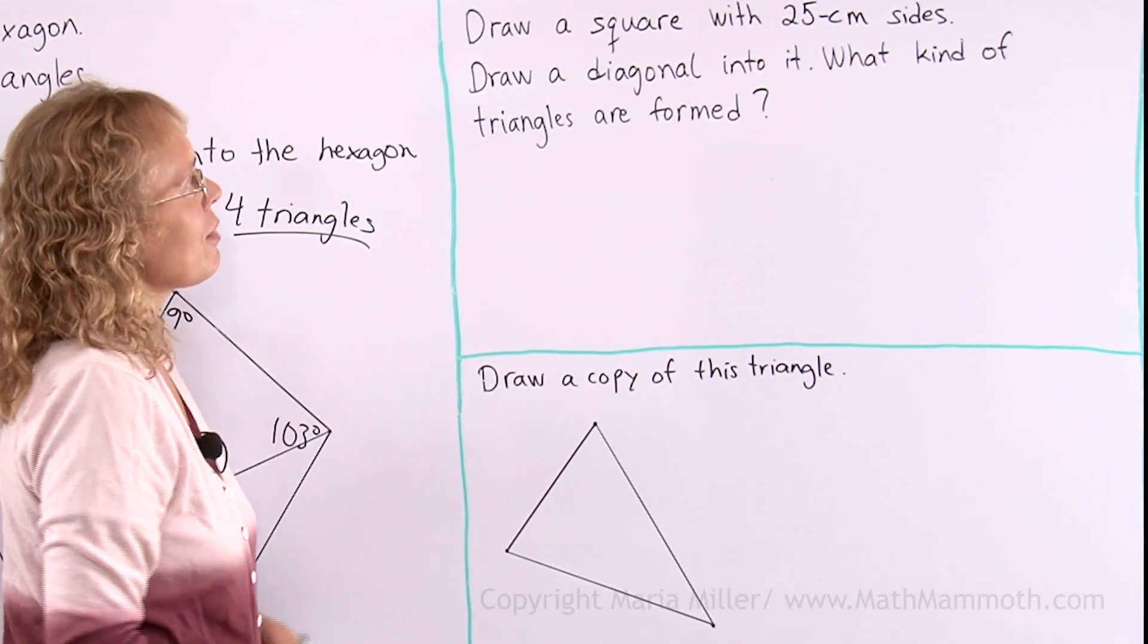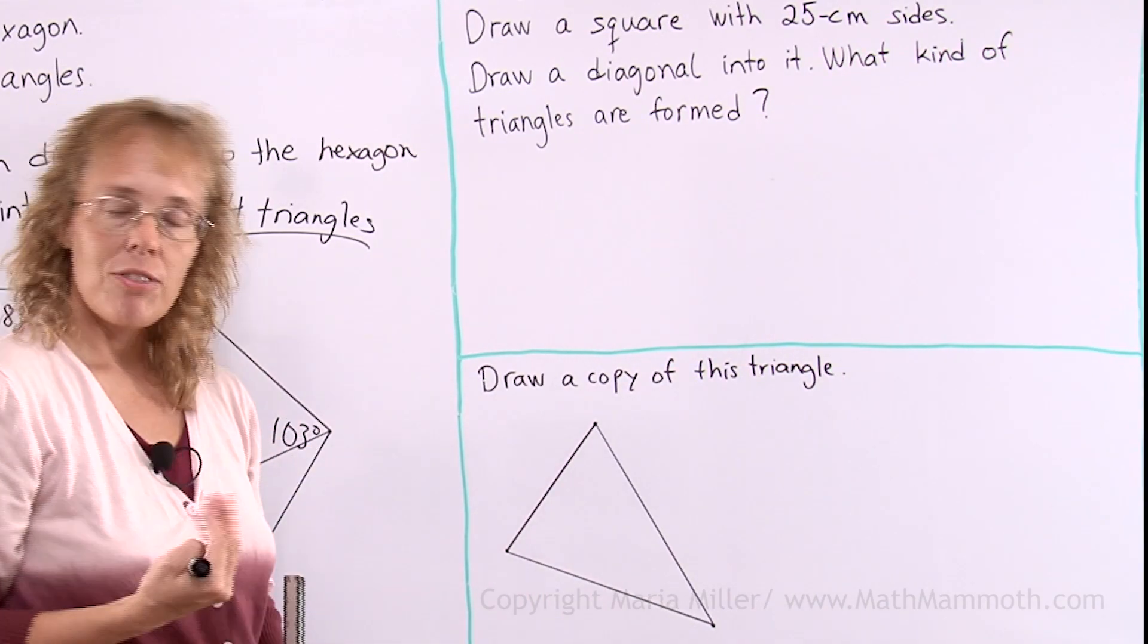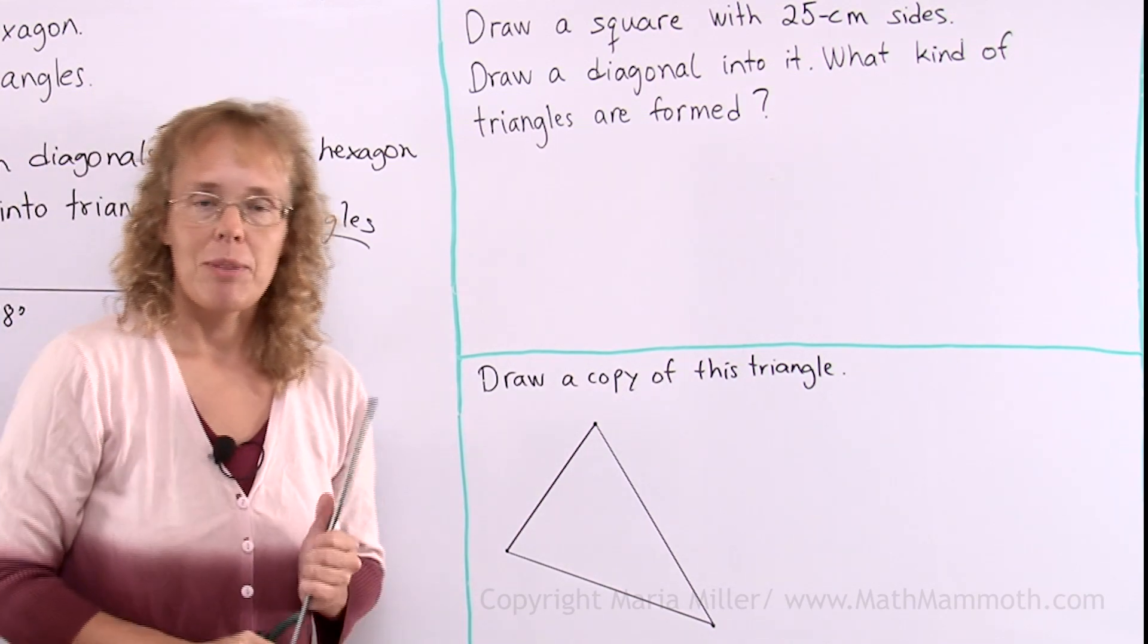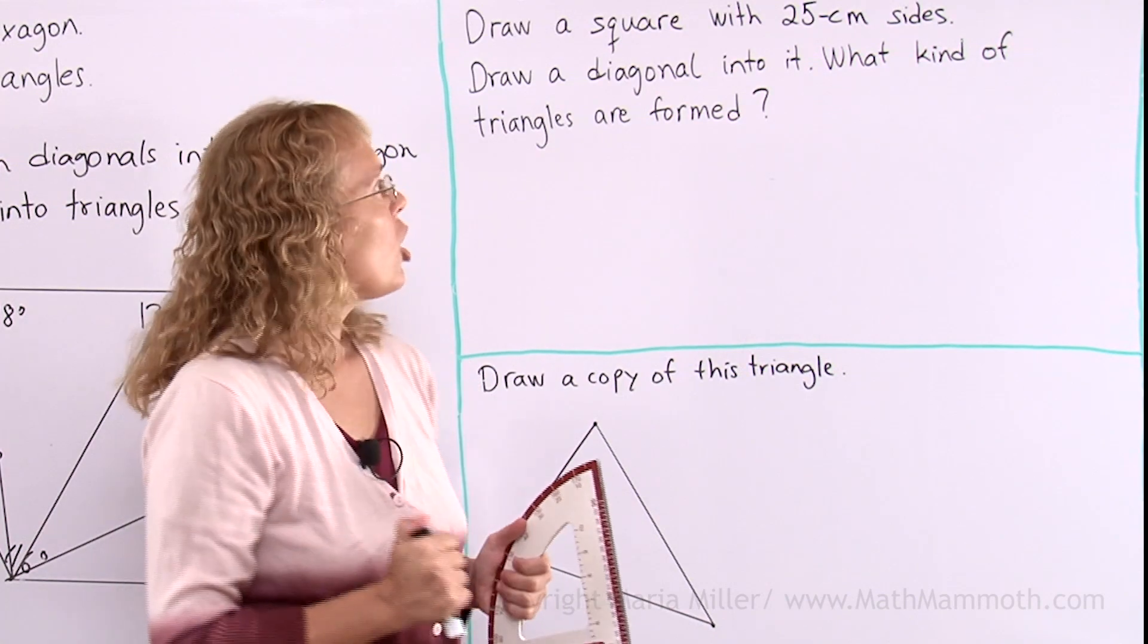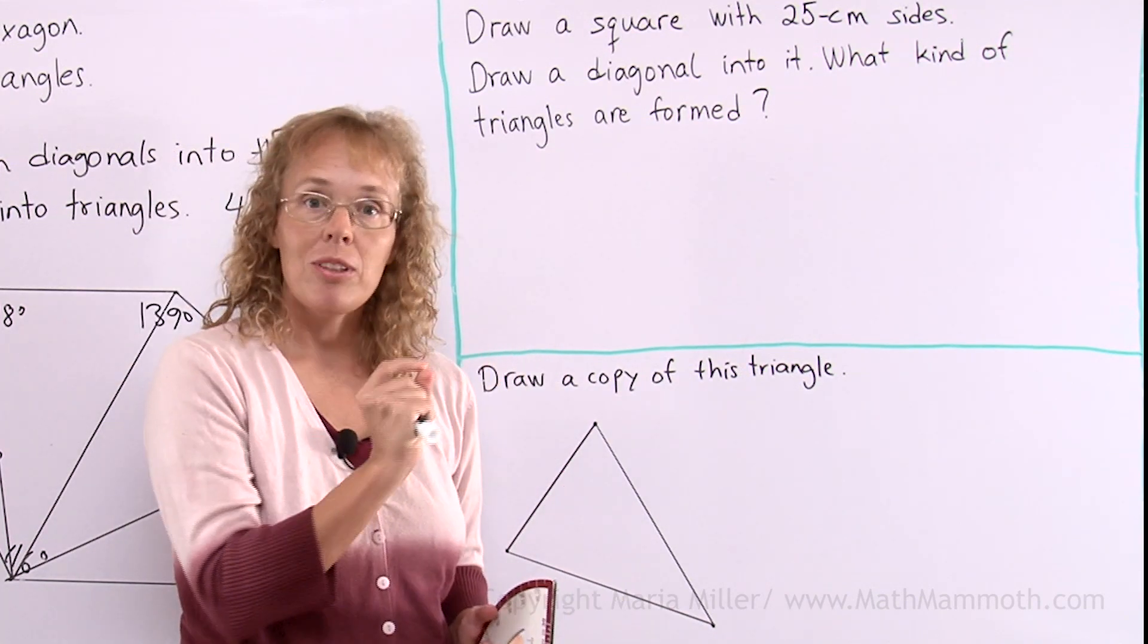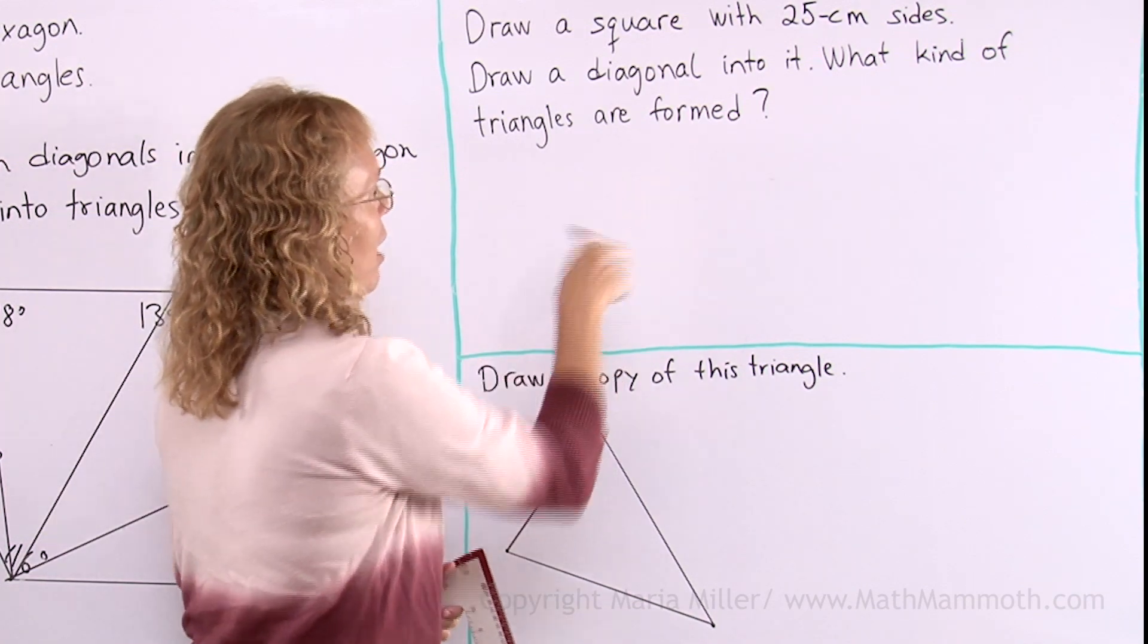Next, we draw a square with 25cm sides and draw a diagonal into it, and what kind of triangles are formed. I need my protractor for this problem because it is a square and I want to have right angles in my square. I don't want to just eyeball it.